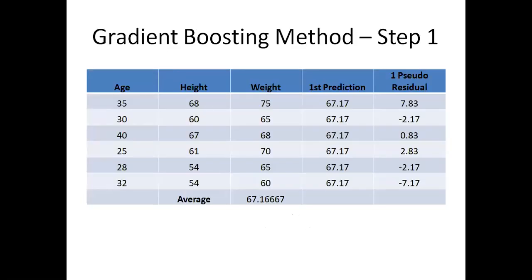This is our data. Let us start the gradient boosting method with a hand calculation. I have age and height as independent variables, and weight as the dependent variable or target column. The first prediction is nothing but the average of all the values in the target column. That means 75 plus 65 plus 68 plus 70 plus 65 plus 60 — there are 6 data points — so the average is equal to 67.1667, which rounds to 67.17. This is our first prediction for all rows, regardless of age or height.